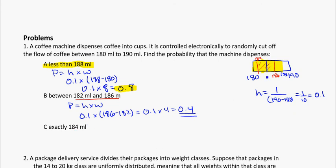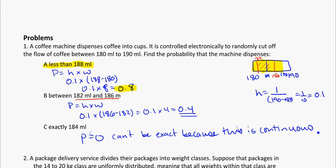And the probability that it's exactly 184, well, 184 exactly. This is actually a trick question. Probability is equal to 0. Can't be exact, because this is continuous data. So that's exactly how you would answer it. It cannot be exact. It'll be 0, because this is continuous.